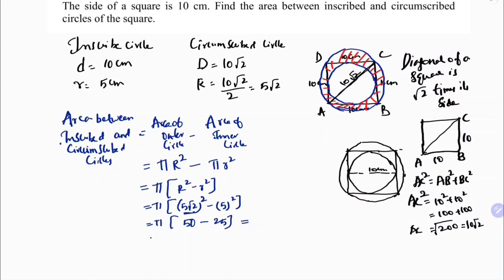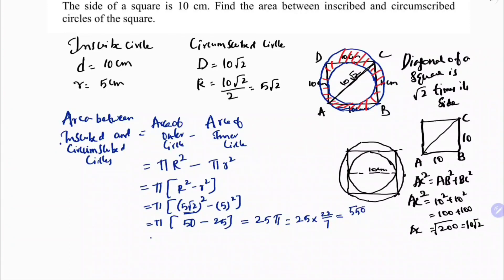The answer is 25π, or equivalently 25 × 22/7 = 550/7 centimeters squared.